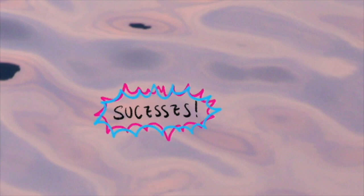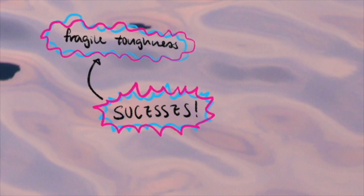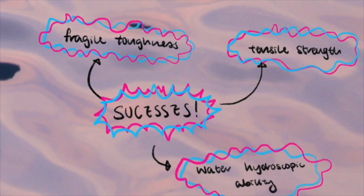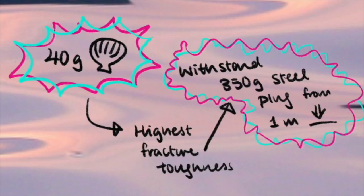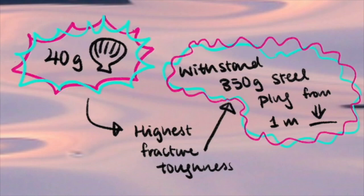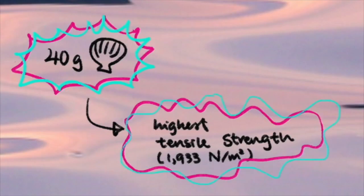In order to acknowledge the success of the bioplastic, we conducted three tests to investigate the optimal proportions of ingredients for product production, which include fracture toughness, tensile strength, and the water hygroscopic behavior of the bioplastic. From experimentation, using 40 grams of clamshells to produce the bioplastic has the highest fracture toughness, able to withstand a 350-gram steel plug drop from one meter, and has the highest tensile strength of 1,933 N/m².